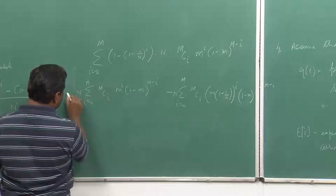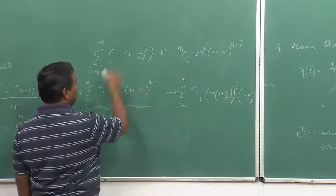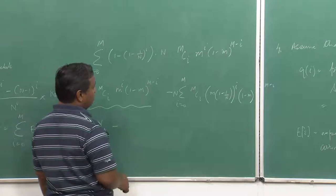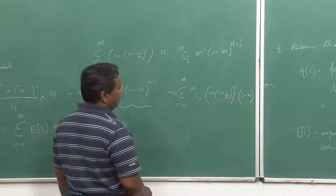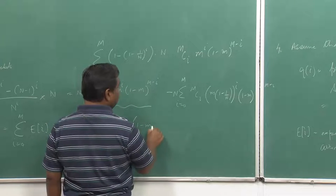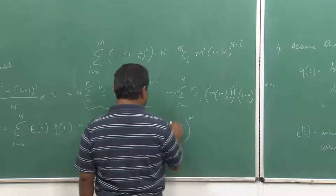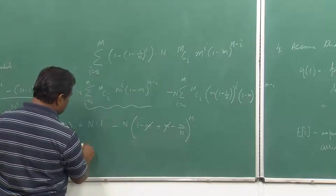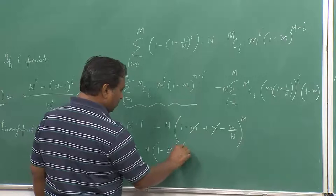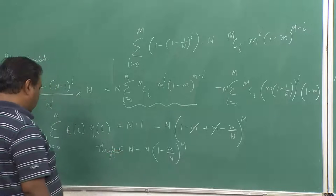Expanding further, we can use the binomial identity. The sum simplifies to 1 raised appropriately, and after cancellation, the throughput for an m by n crossbar becomes n minus n times (1 minus m/n)^m. That is your throughput expression for the m by n crossbar.